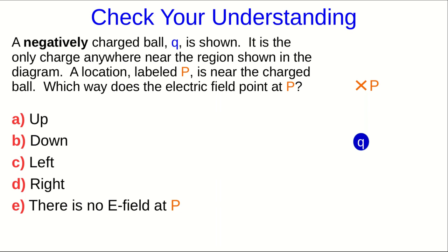Let's check that you've understood the basic definition of the electric field. So suppose we have some negatively charged ball. Call it Q. It's right here. And near to it there's some location that we've labeled P. And this charge here is the only charge in the whole region. There are no other charges nearby. So which way does the electric field point at P?